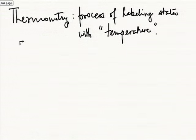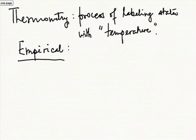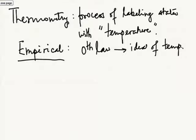Thermometry is essentially an empirical science, in the sense that it is experimentally done — there is no thermodynamic basis for this temperature. This is because the zeroth law gives us the idea of temperature, but it does not tell us which is the best temperature to use or which is the appropriate scale of temperature to use.